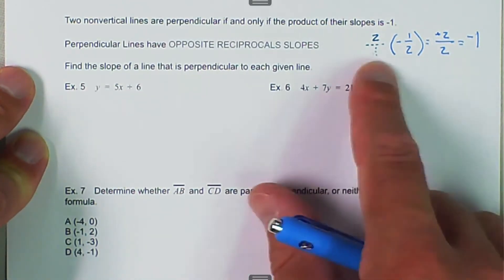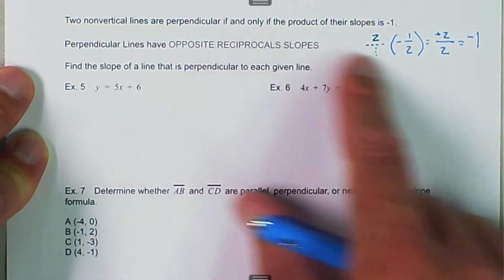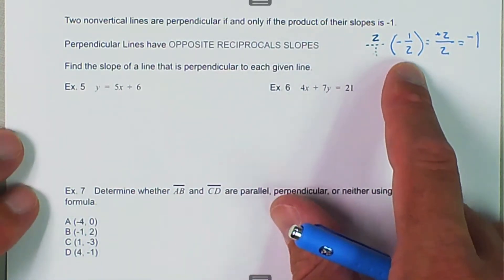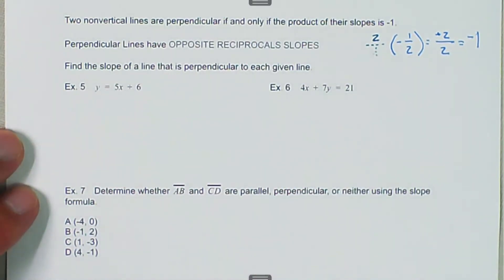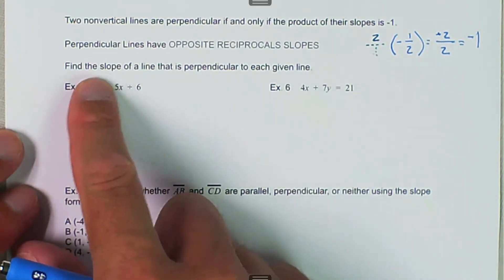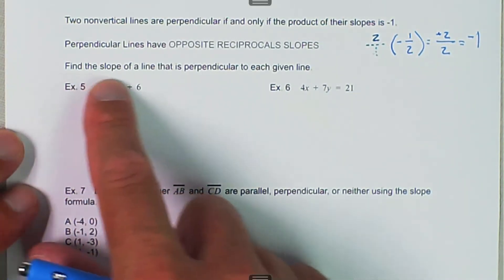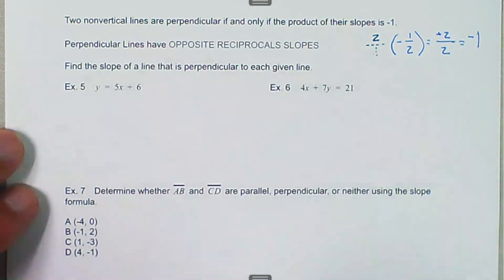You don't necessarily need to know that fact. You can look at the two slopes and decide if they're perpendicular just by looking at them as well. So here we have find the slopes of the line that are perpendicular to each given line.